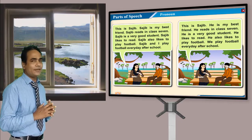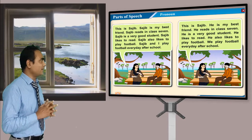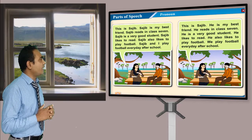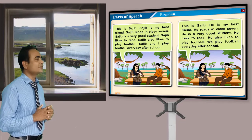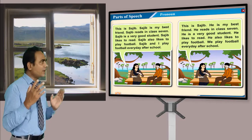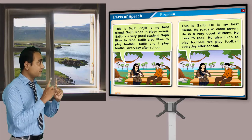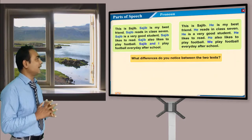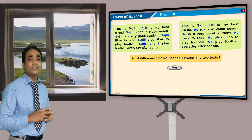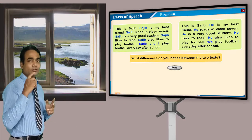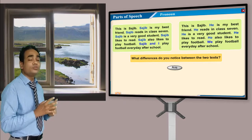Now the same passage — I write it a little bit differently: 'This is Shajib. He is my best friend. He reads in class 7. He is a very good student. He likes to read. He also likes to play football. We play football every day after school.' Look — there are some differences. What difference do you notice between the two texts? I have highlighted the words — just think about what's the difference.